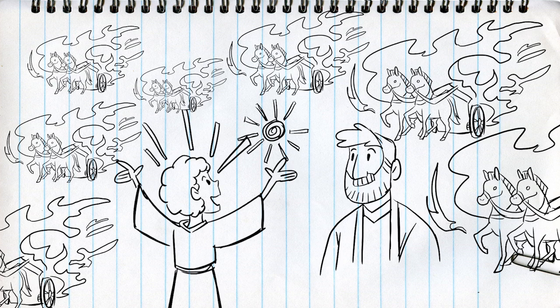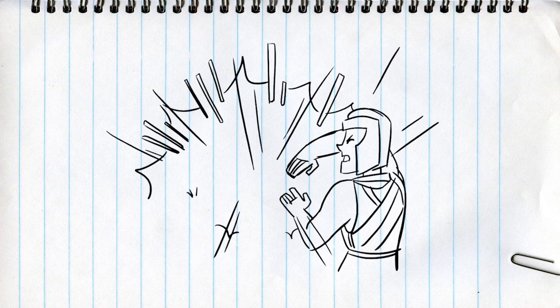The servant's eyes were opened to see God's actions. When the Arameans eventually attacked, Elisha prayed with passion. God, make the Arameans blind so that all they see is darkness before their eyes.